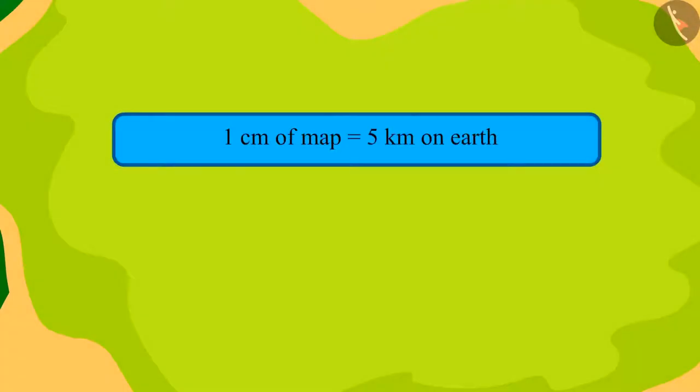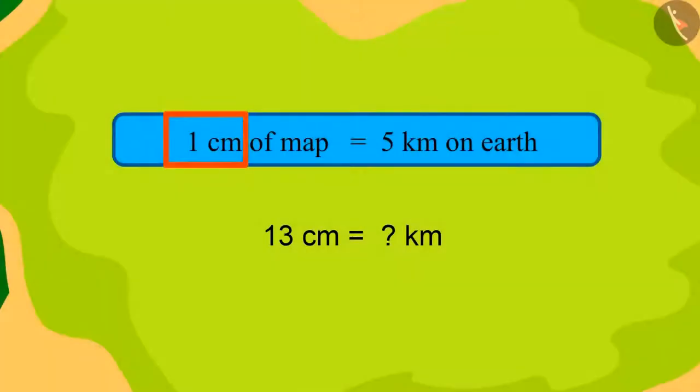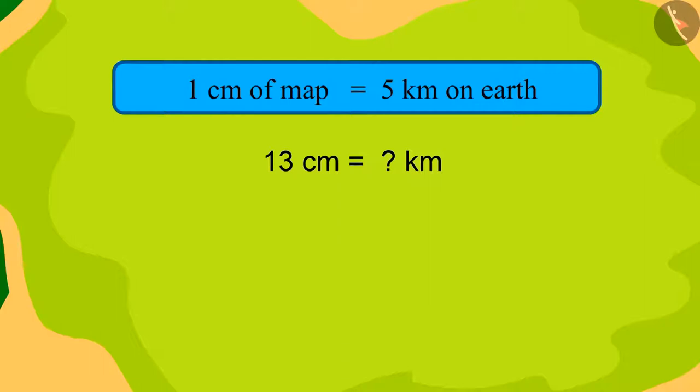Can you really tell the distance by looking at the scale written on this map? You can think by pausing the video if you want. 1 centimeter of map is equal to 5 kilometers on the earth. Therefore, how many kilometers will 13 centimeters be?